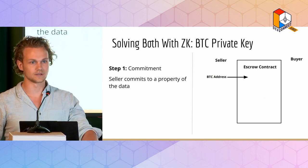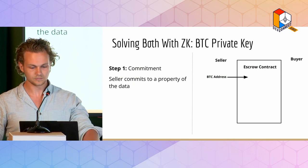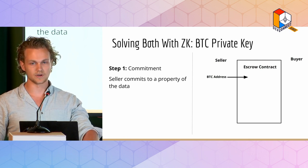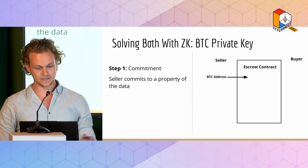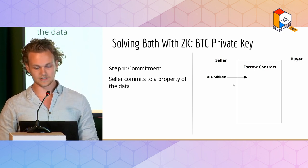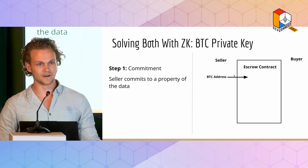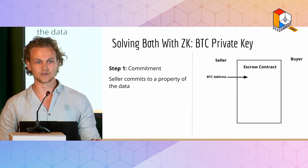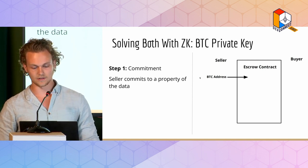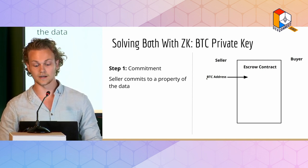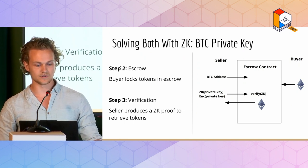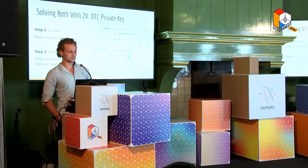This is why we're going to need zero-knowledge proofs to empower these naive mechanisms and achieve both properties. It's best represented by a use-case example — I'm going to demonstrate with the exchange of a Bitcoin private key. We can take the pre-commitment step using a Bitcoin address, which has very verifiable value properties: a user can say they want to buy the private key to that Bitcoin address and can see how much value is in it. The seller attests they're selling the Bitcoin private key and can prove they have the private key to that address. The buyer locks tokens into escrow as before, and in step three, the seller produces a zero-knowledge proof in order to retrieve the tokens.